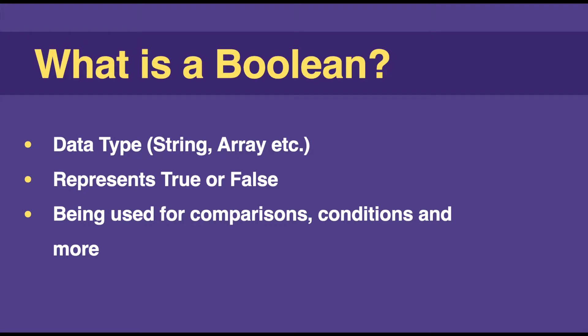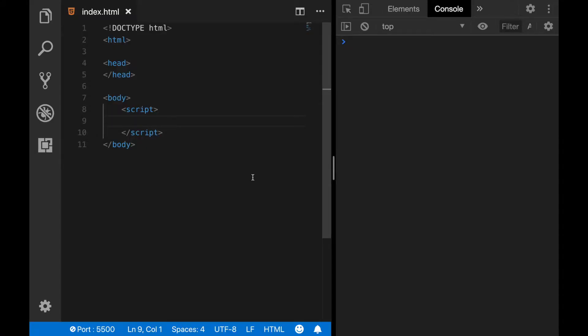Booleans are very useful in daily programming. We can use them to compare a condition, or to answer a yes or no question, or to turn a feature on or off. Now let's see how to use a boolean in an example.